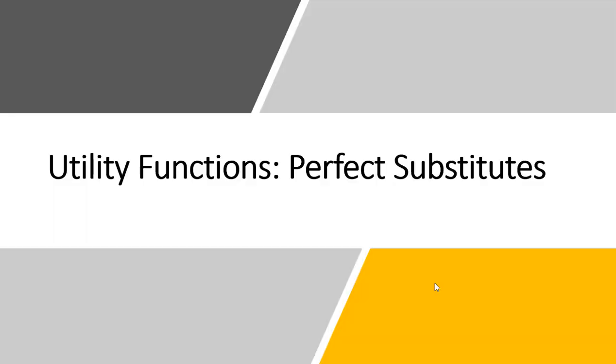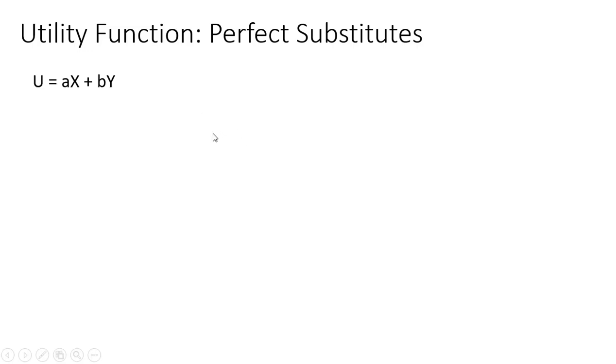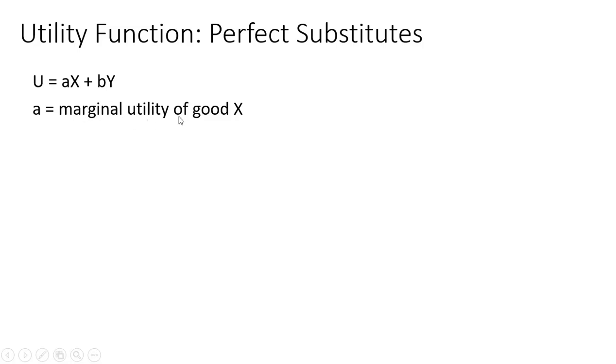In this video, we're going to look at perfect substitutes. A utility function with perfect substitutes will take this standard form, where utility equals a times x plus b times y. Here, a represents the marginal utility of good x, and b represents the marginal utility of good y.